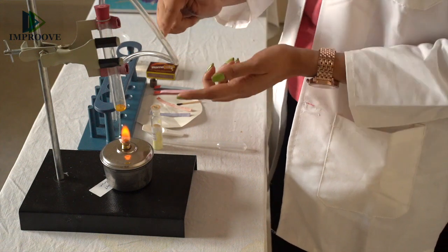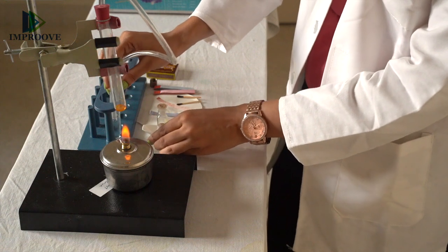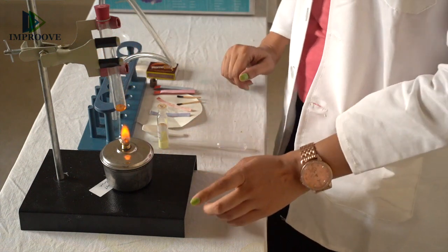The fumes pass through the delivery tube into the test tube containing water. The gas that has been liberated is sulphur dioxide, as sulphur powder reacts with oxygen in the air, and it will then react with the water.